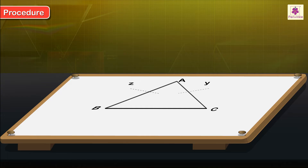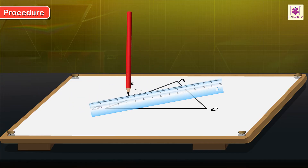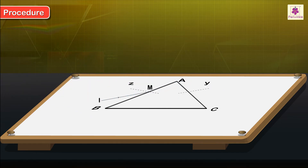Remove the prism. Draw normals Z and Y to faces AB and AC respectively. Draw ray IO at an angle of 30 degrees from the normal. This is the incident ray. Mark two points P1 and P2 along the ray IO.